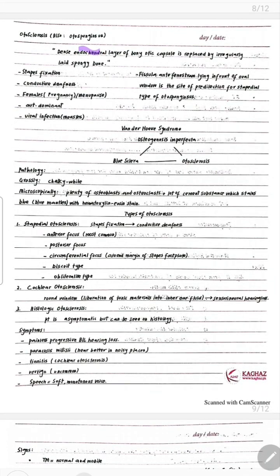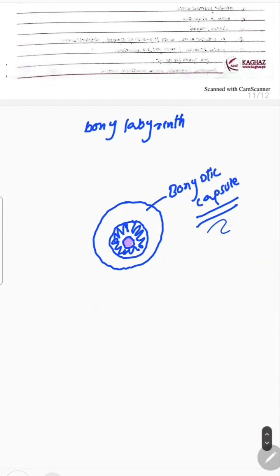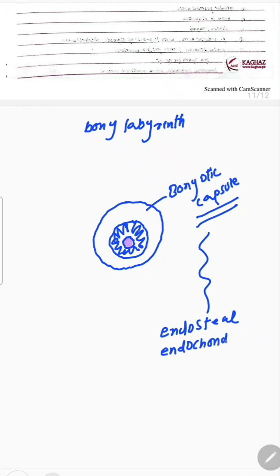This bony part is replaced by an irregularly laid spongy bone. The otic capsule has three layers: there is an endosteal layer which is the upper layer, an endochondral layer, and one periosteal layer. The problem is with the endochondral layer — this endochondral layer is replaced by spongy bone.